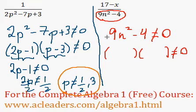Once we factor 9n squared minus 4, we obtain 3n minus 2 times 3n plus 2.